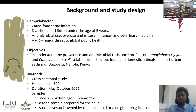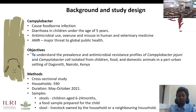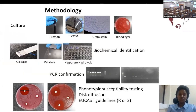We carried out a cross-sectional study whereby we visited 590 households between May and October this year. Some of the samples collected were stool samples from children aged between 6 months to 24 months, a food sample prepared for the child, and stool samples from livestock owned by the household or the neighboring household.